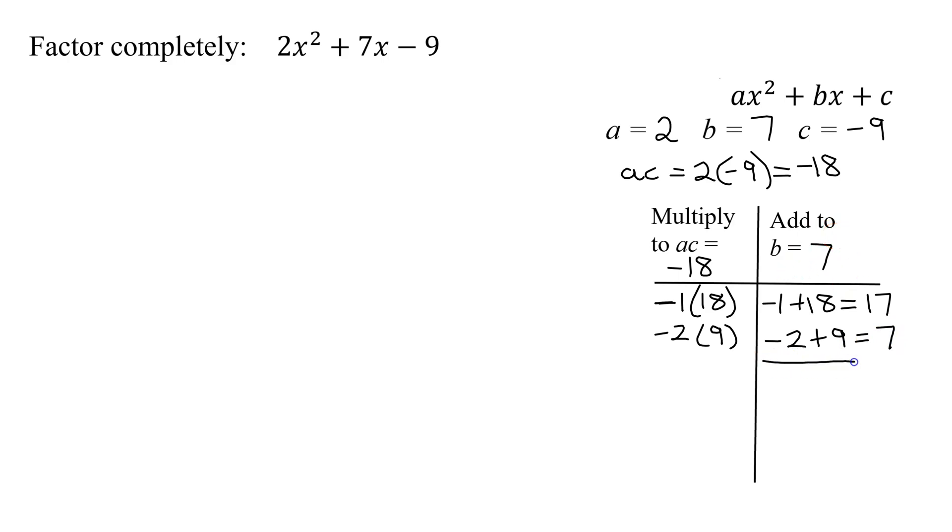So now remember, these are not my factors. They're going to help me find them. But since a did not equal 1, this is what I'm going to write my middle term down as. I'm going to break it into two terms. So instead of writing 7x, I'm going to write negative 2x plus 9x.